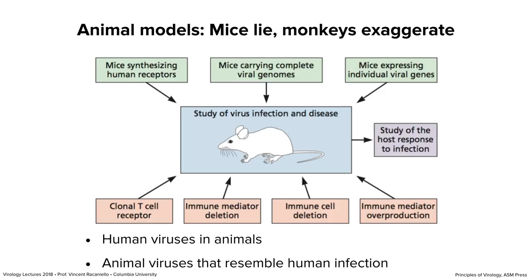Some people don't like mouse-adapted viruses because those mutations aren't present in viruses that infect people, but you can still harvest information. We can use human viruses or animal viruses that resemble human infections, and as we go through the next set of lectures, you'll see examples of both.